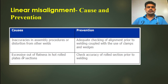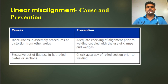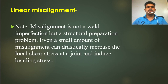Another cause is excessive out-of-flatness in hot rolled plates or sections. If the plate has excessive out-of-flatness, this type of problem can also occur. Prevention: check accuracy of rolled sections prior to welding. We should check the accuracy of the rolled section before starting welding. Note that misalignment is not a weld imperfection but a structural preparation problem. Even a small amount of misalignment can drastically increase the local shear stress at the joint and induce bending stress.